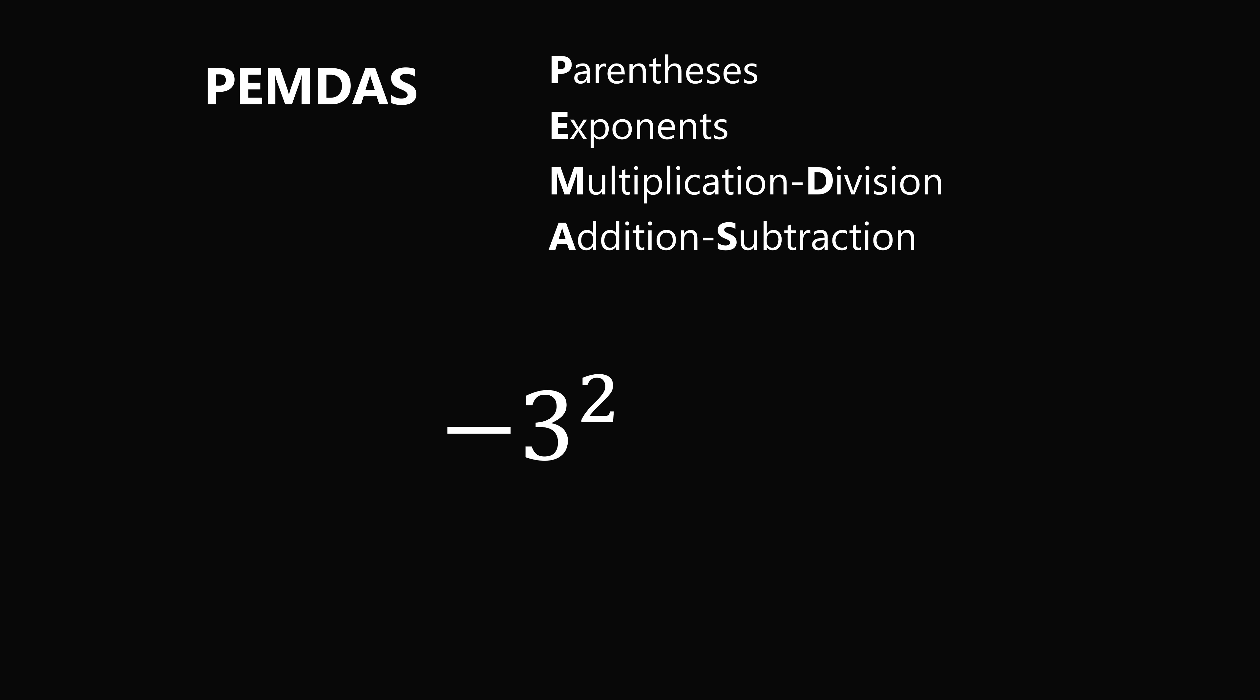We can remember the order of operations by the acronym PEMDAS, which refers to parentheses, exponents, multiplication and division, and addition and subtraction. You could also remember it as BODMAS, where parentheses has the analog of brackets, and exponents has the analog of orders. If you have two operations of the same precedence, you want to evaluate them from left to right. So that would be multiplication, division, or addition, subtraction.